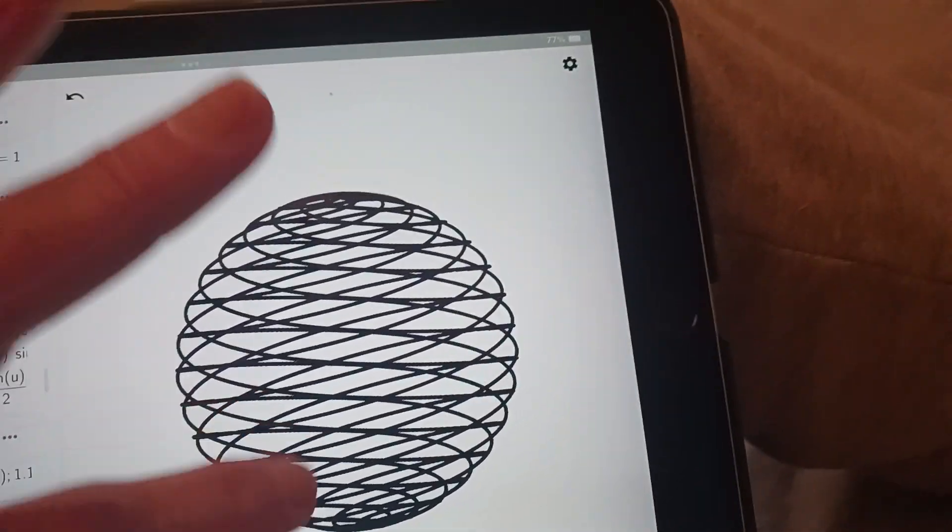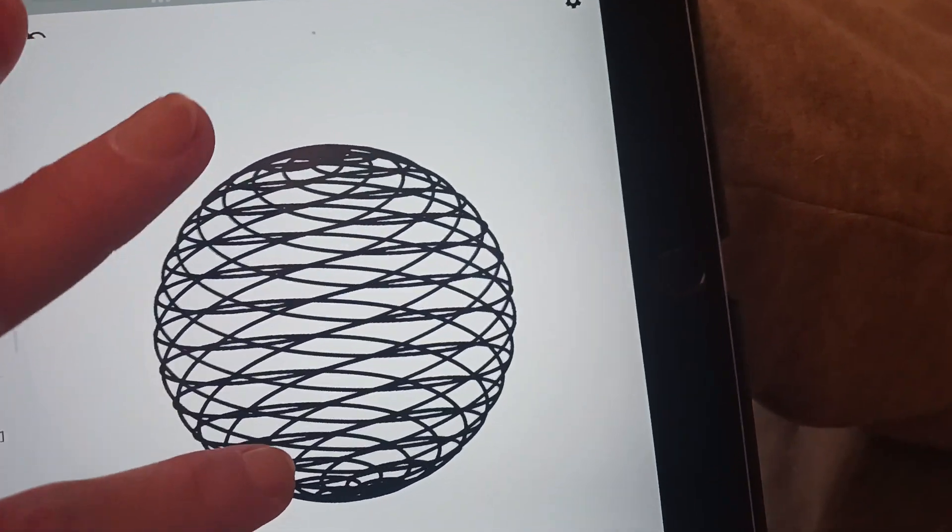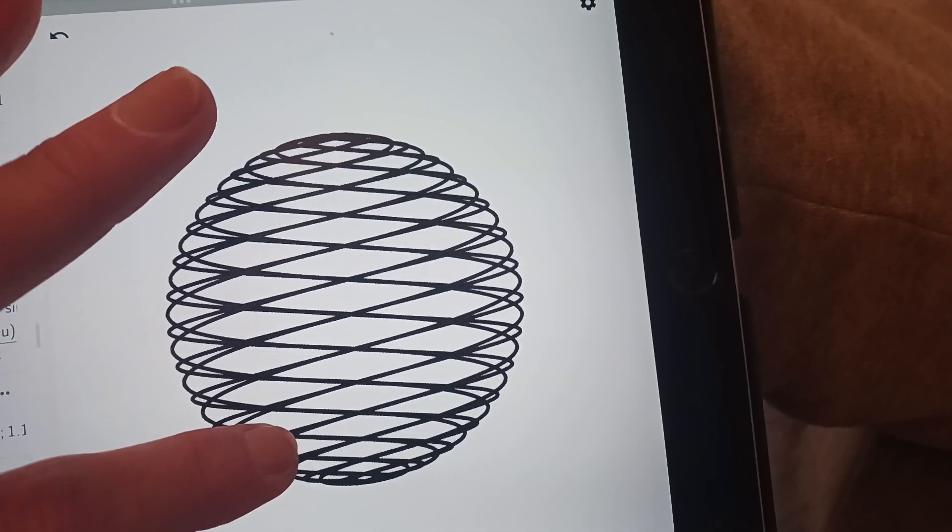And so there's a sphere, right? There we go. Beautiful little sphere made out of curve.